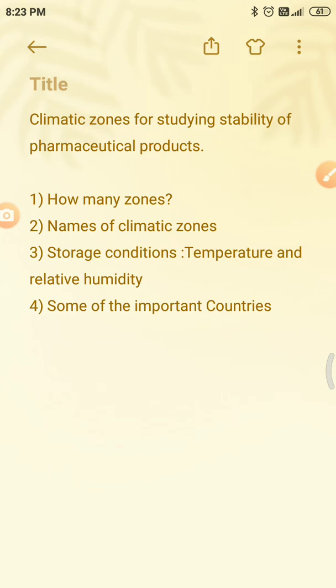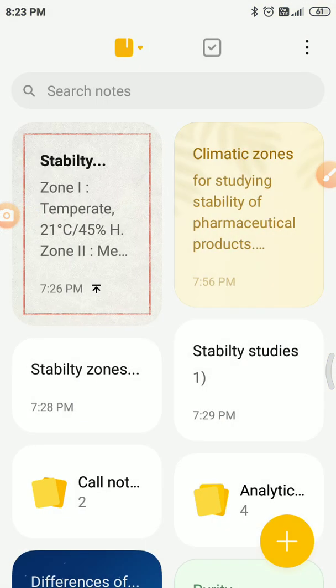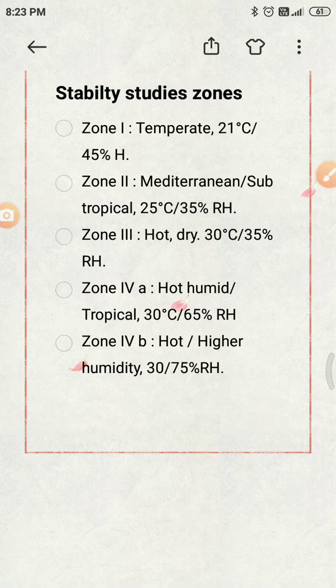So how many zones are there? There are mainly four zones, but the fourth one has four A and four B, so in total there are five climatic zones. The names are: Zone 1 — Temperate climatic zone; Zone 2 — Mediterranean or subtropical climatic zone; Zone 3 — Hot and dry climatic zone; Zone 4A — Hot, humid or tropical climatic zone; and Zone 4B — Hot and higher humidity zone.